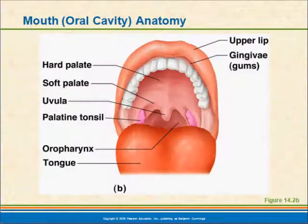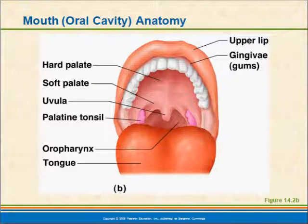Looking again at the mouth cavity, you can see the hard palate, soft palate, uvula, and tonsils. The purpose of the mouth is to chew food — we masticate, breaking down large pieces into smaller pieces, and mix it with saliva. Saliva forms food into a bolus that is easily swallowed, allows us to taste the food, and contains enzymes that initiate breakdown of some nutrients. The tongue is also involved in initiating swallowing by triggering a reflex action, and of course the tongue bears the taste buds which allow for the sense of taste.